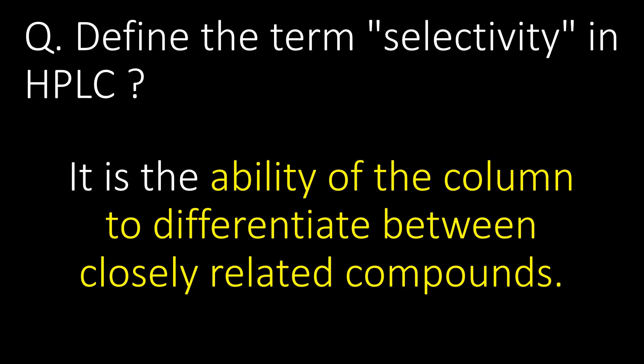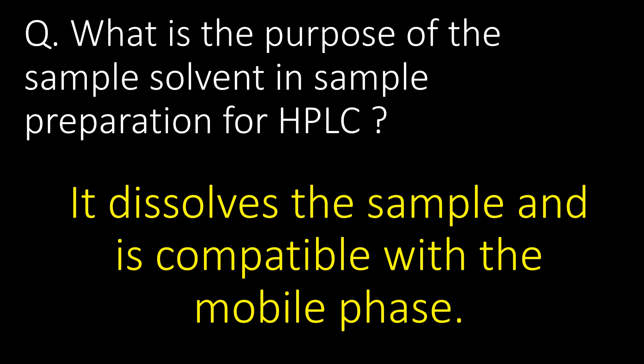Define the term selectivity in HPLC. Selectivity in HPLC is the ability of the column to differentiate between closely related compounds. The sample solvent dissolves the sample and is compatible with the mobile phase.